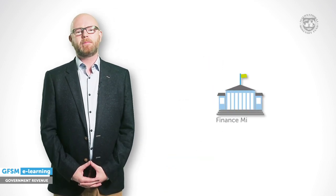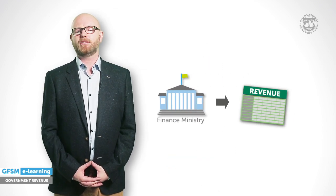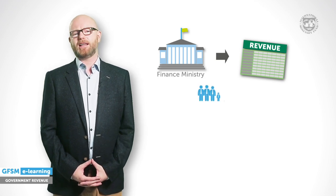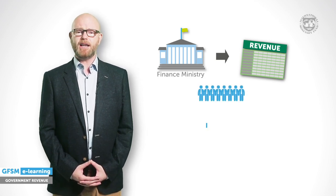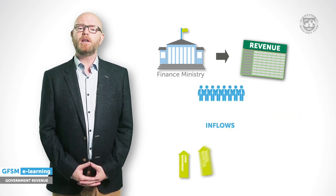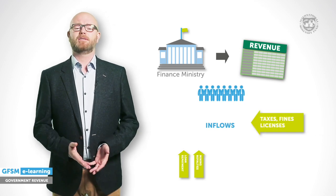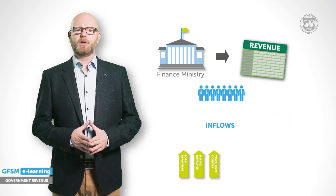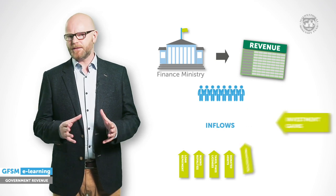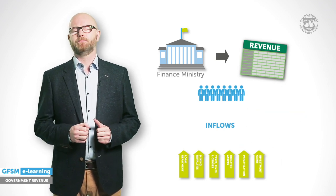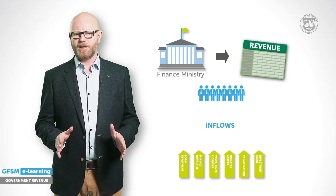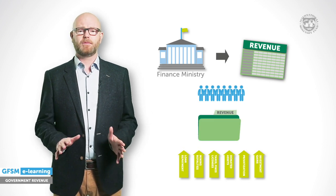Suppose the Finance Ministry is preparing a table of government revenue components for a budget statement. While preparing the statement, the Finance Ministry staff reviews cash inflows such as the repayment of loans, royalties from mining, or inflows from taxes, fines or licences. Perhaps there are also inflows from donated assets by foreign governments, a privatisation, or from investment gains following a stock market boom. As it reviews the estimates, the staff first needs to identify the inflows that are classified as revenue.